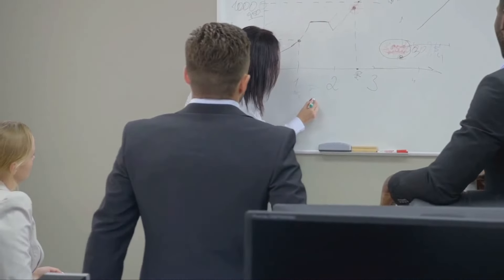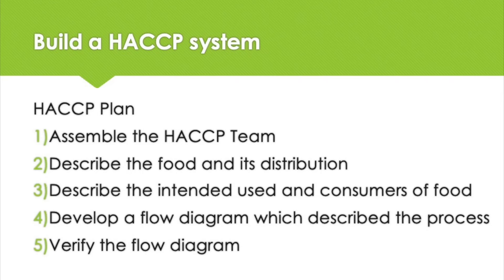To develop a HACCP plan, there are five tasks to accomplish before the application of the HACCP principles: assemble a HACCP team; describe the food and its distribution; describe the intended use and consumers of the food; develop a flow diagram which describes the process; and verify the flow diagram. After the five preliminary tasks are completed, the seven principles of HACCP can be applied to ensure safe food production. These are normal operations for our processes, whilst HACCP is specific to each process and product.